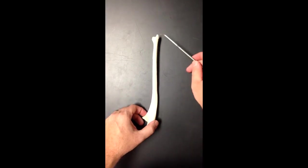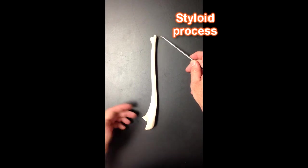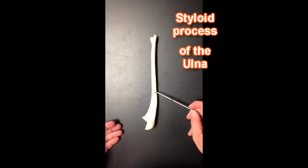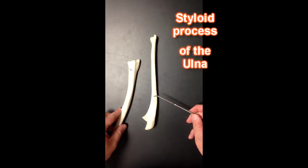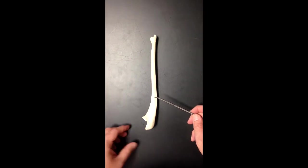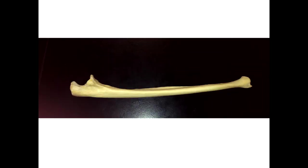Down here we've got another styloid process but this is the styloid process of the ulna, not the styloid process of the radius. There's one more structure I'd like to highlight and that's the coronoid process. Not coracoid like on the scapula, but coronoid on the ulna. Coronoid means crown-like, as if these pointy structures were like the points on a crown.